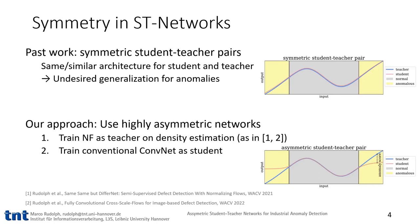We discovered a problem for conventional student-teacher networks in the context of anomaly detection. In past work, student and teacher had the same or a similar architecture. This leads to an undesired generalization of the student to the teacher, such that the distance is still small for anomalies.